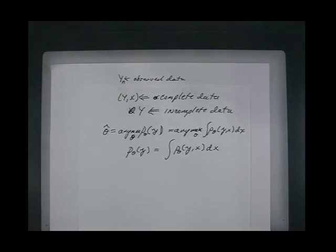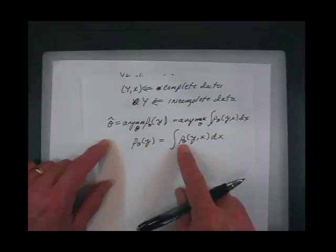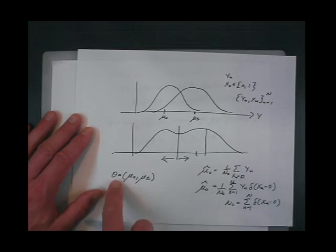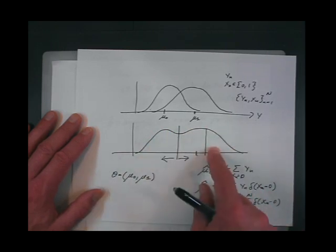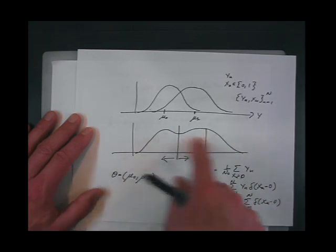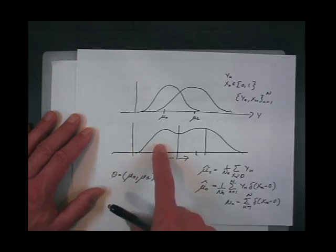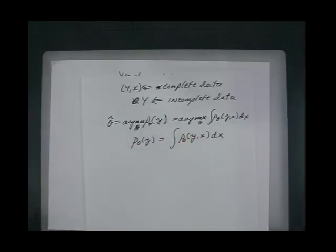A student asks: if you're only given Y, won't the mean be something in the middle of those two means? That's a very good question. The mean of the overall distribution will be in the center, but that's not what theta is. Theta is actually a vector in this example — a vector of the two means. For each value of theta_0 and theta_1, this distribution will have some form. I can compute the maximum likelihood estimate of the observed data given this distribution, but the distribution is fairly complicated — it's a linear combination of the two distributions.